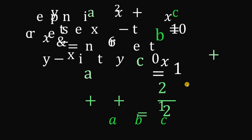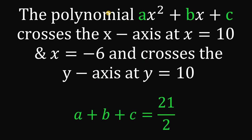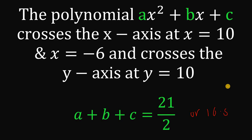So our answer to this Berkeley Math Tournament question — the polynomial ax squared plus bx plus c crosses the x-axis at x equals 10 and x equals negative 6, and crosses the y-axis at y equals 10 — the sum a plus b plus c equals 21 over 2, or 10.5. And we are done.